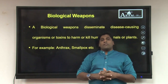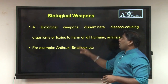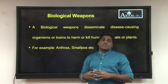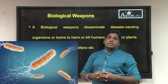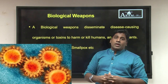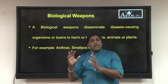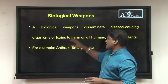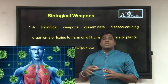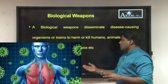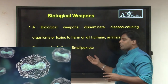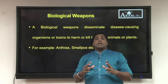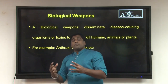We will start with Biological Weapons. Biological Weapons are those which disseminate disease-causing organisms like viruses, bacteria, or other pathogens. In the name of destroying a particular country's population, this type of weapon directly targets humans. Examples include Anthrax, Smallpox, and a few other viruses and bacteria that actually kill many people.